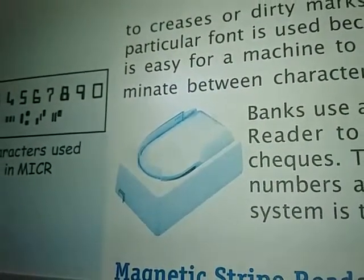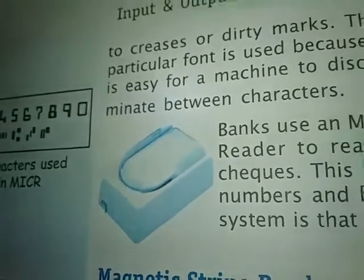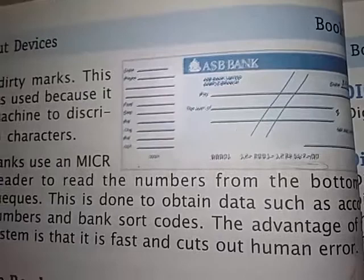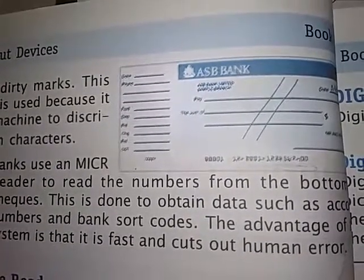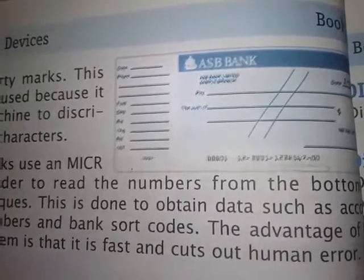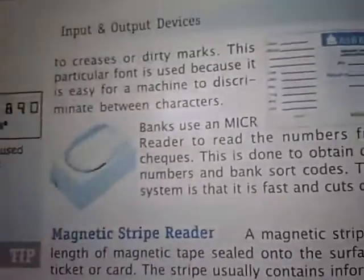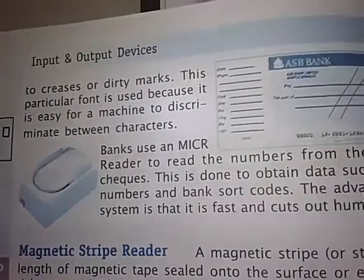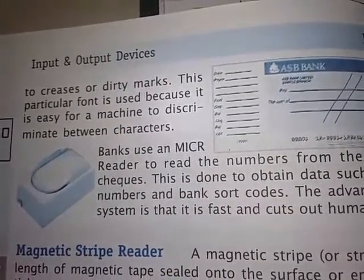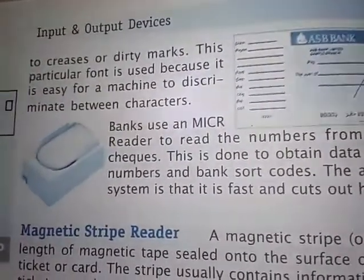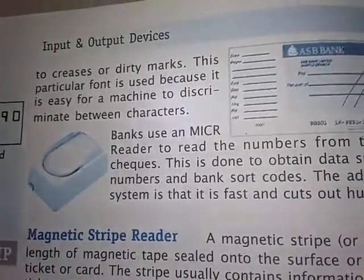The M-I-C-R scanner reads the check. The digits represent information such as the name of the user, the city, the branch, and other account data. The M-I-C-R is fast and the chances of error are very low because these are special characters that the machine can scan accurately.